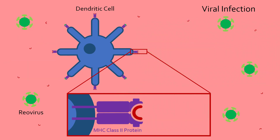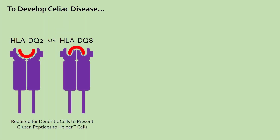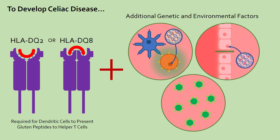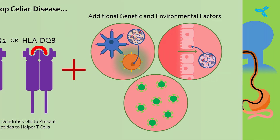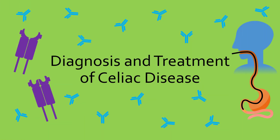So to develop celiac disease, not only do you need to have HLA-DQ2 or DQ8 so your dendritic cells can present gluten peptides to helper T-cells, but you also need certain environmental and genetic factors that cause your immune system to react to these gluten peptides. Now that we understand the cause and effects of celiac disease, let's discuss who gets this disease, how to detect it, and how to treat it.